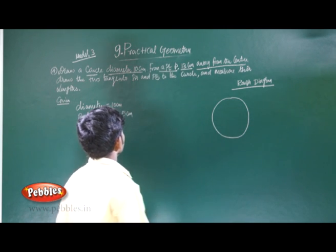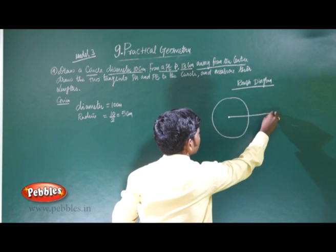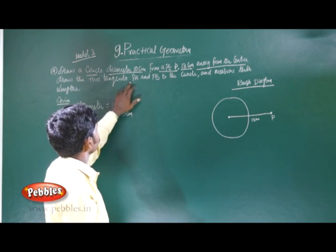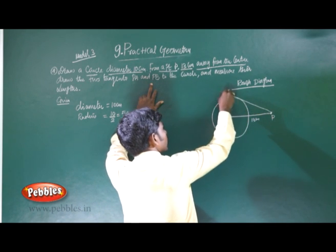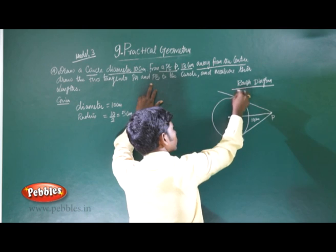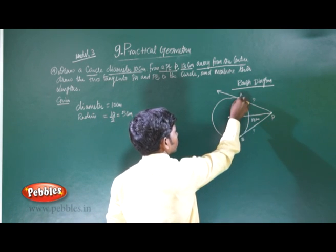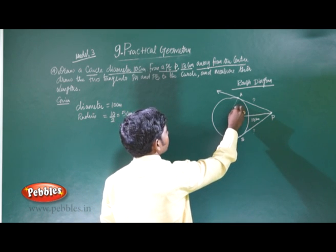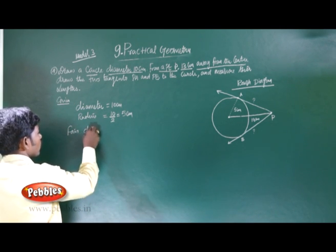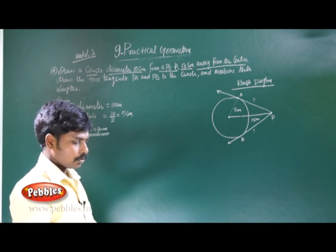Draw a circle of radius 5 centimetres from a point P, 13 centimetres away from the centre, and draw the 2 tangents PA and PB and measure the length. The radius of the circle is 5 centimetres. Draw a circle of 5 centimetres, so take 5 centimetres on a compass.